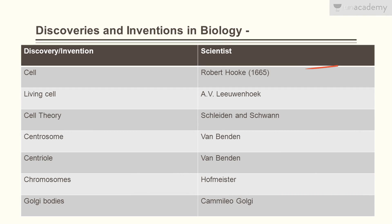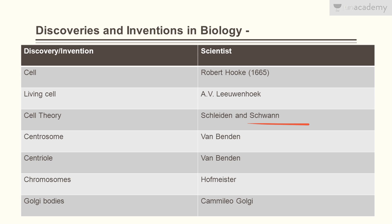The cell was first discovered by Robert Hooke in 1665. A living cell was discovered by Anton van Leeuwenhoek — Robert Hooke discovered the dead cells of cork. The cell theory was given by Schleiden and Schwann.